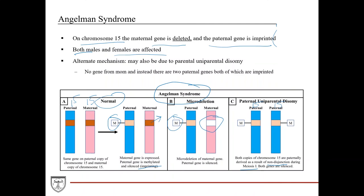Where this comes into play is if non-disjunction of chromosome 15 occurred in the father and that sperm is inherited — both genes on those chromosome 15s are methylated, which is normal for paternal chromosome 15. As a result, both genes are silenced and you develop Angelman syndrome. The name of the specific gene isn't critical to know, but it's involved in neurodevelopment, which explains the clinical manifestations we'll discuss.